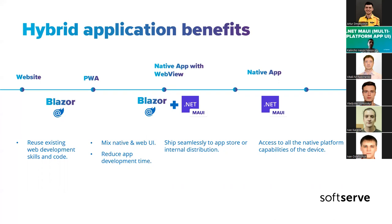This hybrid architecture gives us all the advantages of the shared business logic including the web app, and then you can build the shared Razor components and use them in the native app for iOS or any other platform. The benefits of this architecture include: reusing existing web development skills, mixing native and web UI, reducing app development time, shipping directly to the App Store, Google Play, or the Microsoft Store, doing internal distribution, and having access to all native platform capabilities.